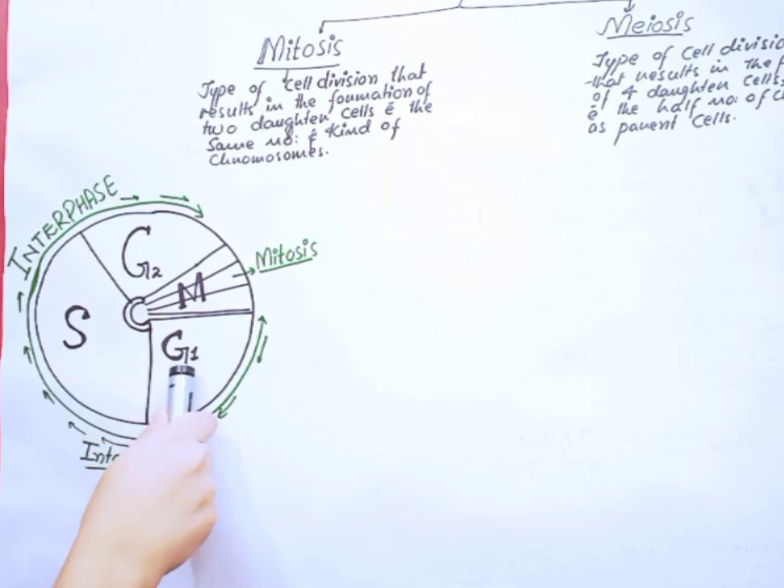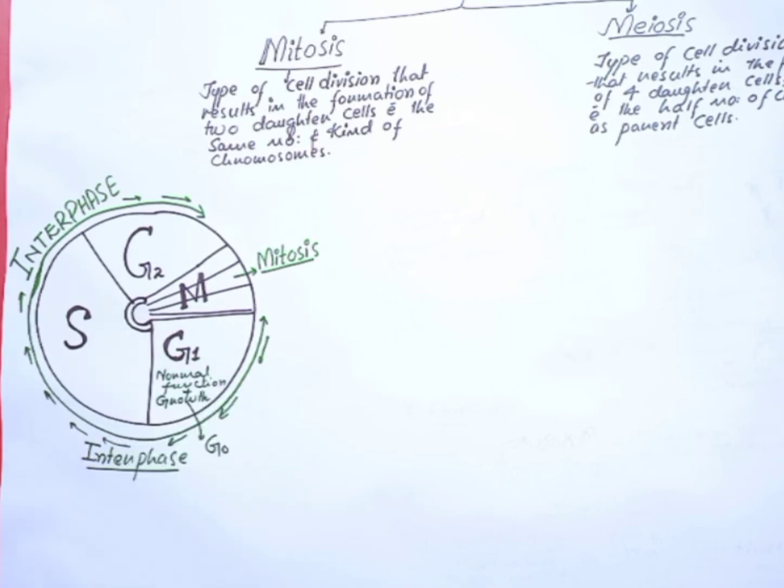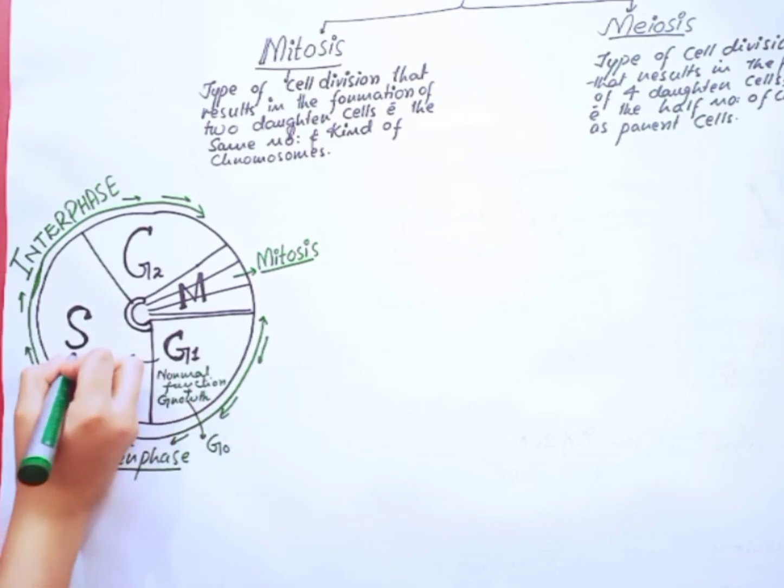In this G1 phase, the cell performs its normal function and grows in its size. If the cell is actively dividing, then it goes through the synthesis phase. But if the cell is not an actively dividing cell, then it will go to the G0 phase.